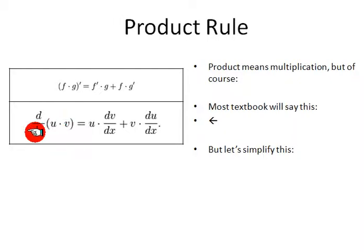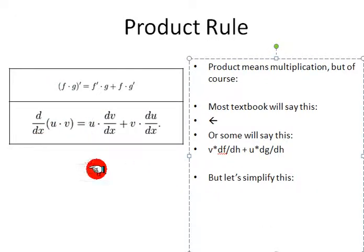Now there's another way to do this. You know how they do this: u times dv over dx plus v times du over dx. So don't let that throw you. Now they do this, so to me this is even more confusing. What this really means, or some textbooks will say, v times df over dh plus u times dg over dh. So dx, dh, whether they say df, dv, it's basically all the same thing.